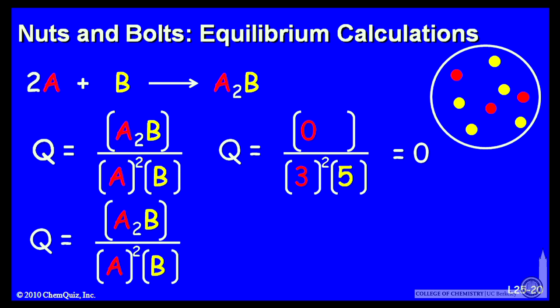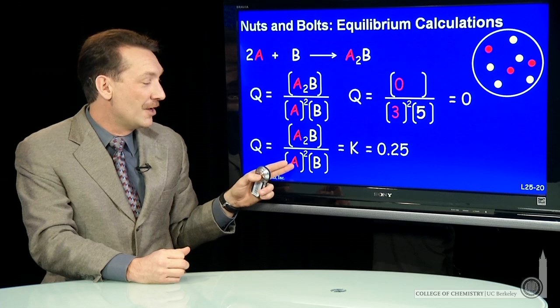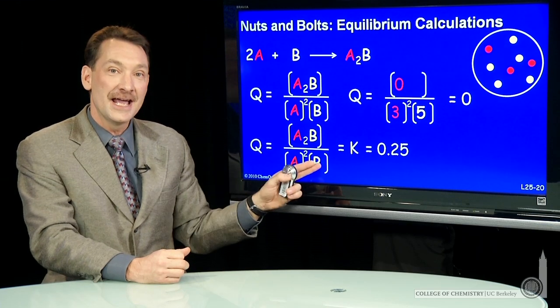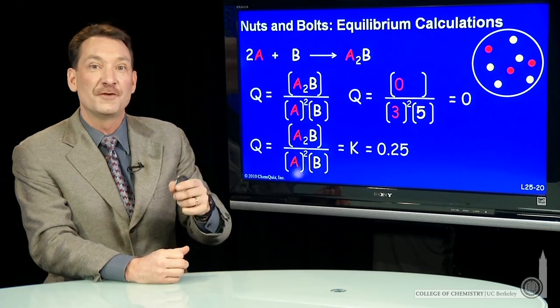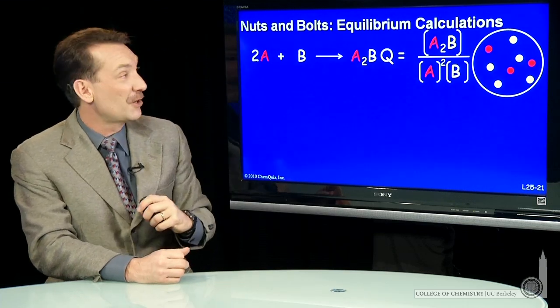We can do the calculation. Here's my quotient. It's going to equal K of 0.25. I expect A2B to be produced, and we'll lose a little A and a little B. Let's see if we can do that analytically. Here's the reaction and the quotient expression for Q.